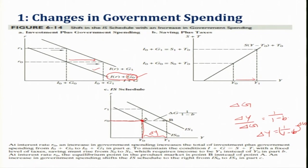In contrast, if there is a decrease in government expenditure — or compared to the previous level, suppose this year there is a decrease in government expenditure — or if there is an increase in tax, then the curve will be shifting leftwards.